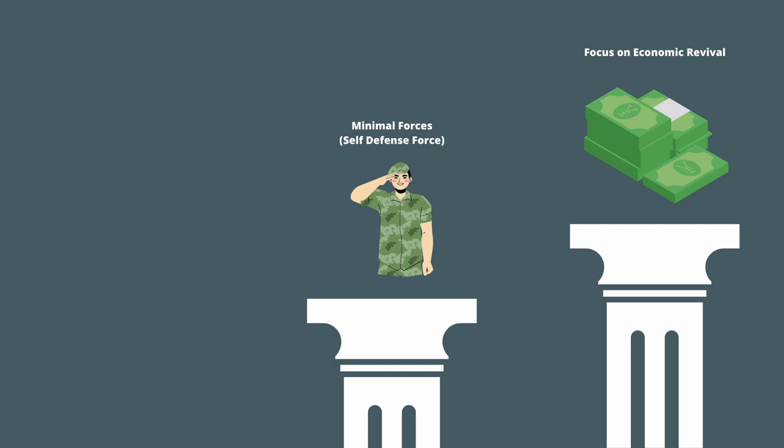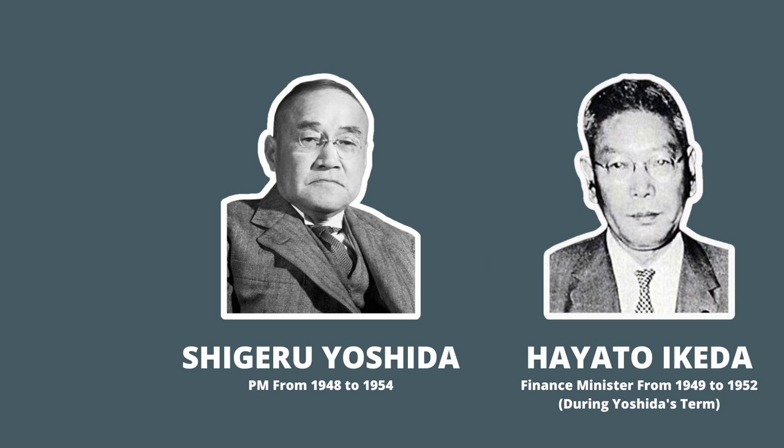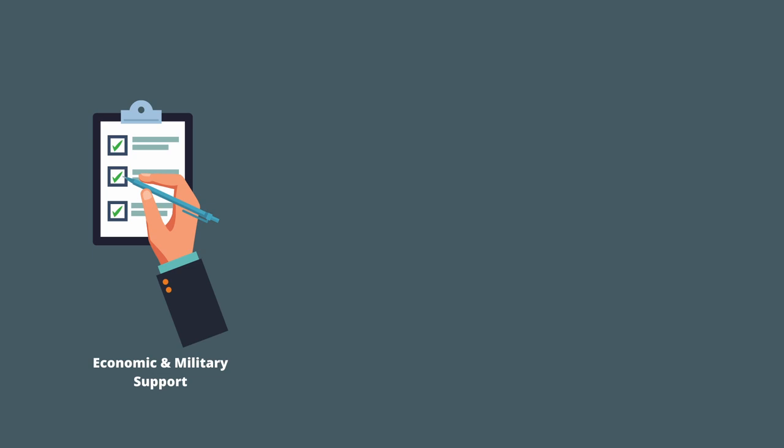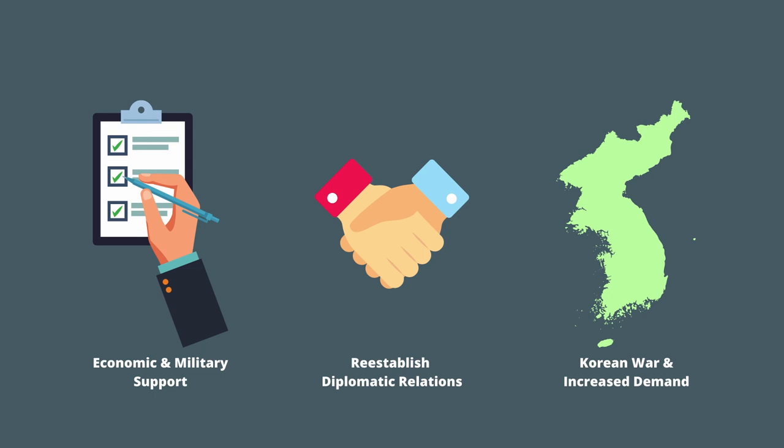Yoshida and his finance minister Hayato Ikeda will help rebuild Japan from their ashes. Their environment was ripe for growth as well. America was determined to militaristically and financially support Japan, and the country could focus on re-establishing diplomatic relations. The Korean War created demand for Japanese goods and services. Growth sparks innovation, and eventually more people get rich.